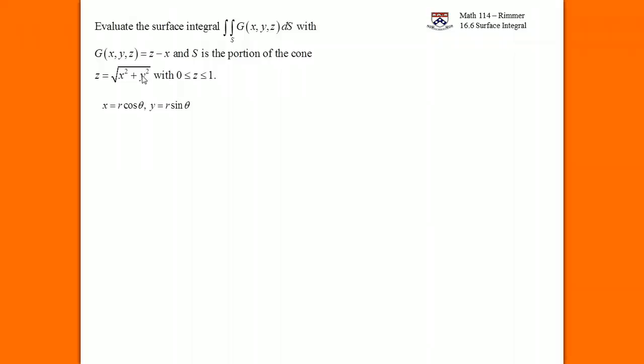Then in polar, z is equal to r. That will be the last part of the parametrization. Remember, the parametrization is just x, y, and z as functions of other variables. So x is a function of r and theta, y is a function of r and theta, and z is a function of r and theta. There's just no theta involved; it's theta-independent.